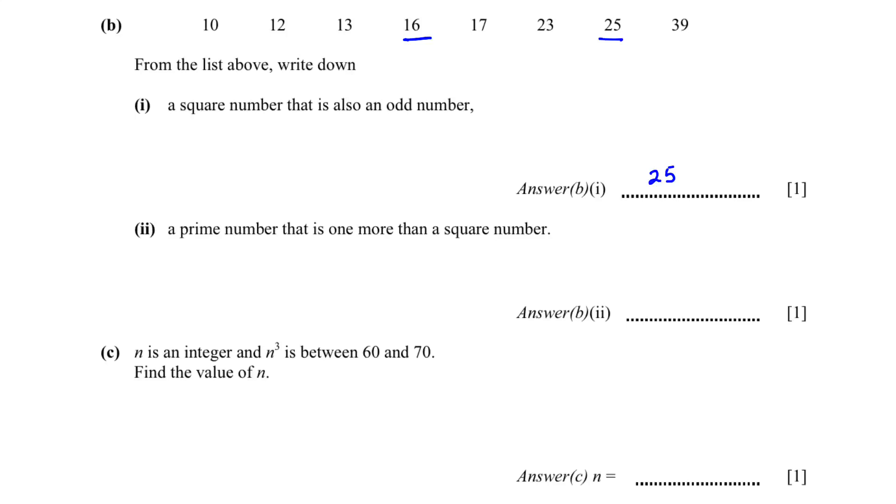In B2 we are asked to find a prime number that is one more than a square number. We already know that 16 is a square number. So one more than 16 will give us 17. 17 is a prime number.